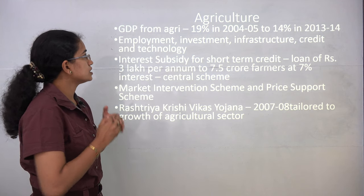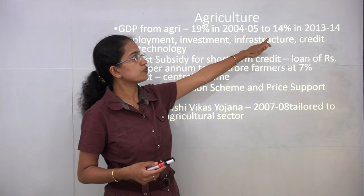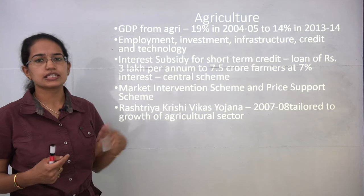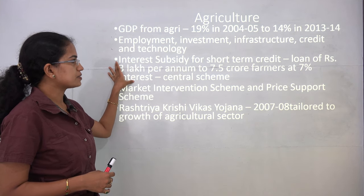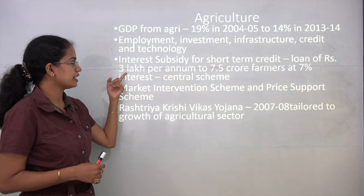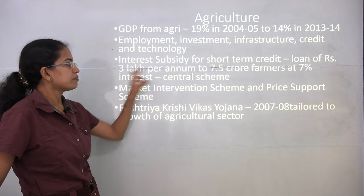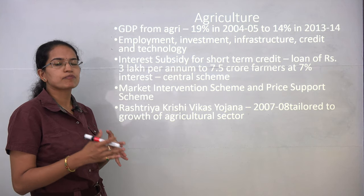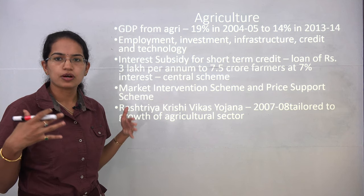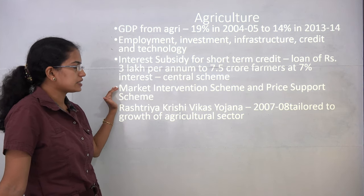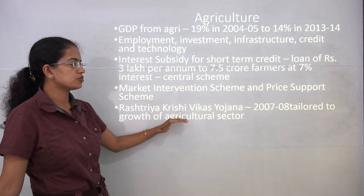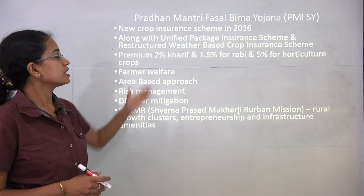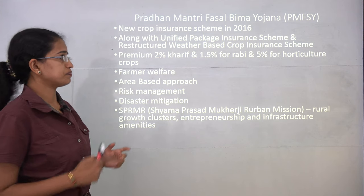Agriculture is the heart and soul of the rural economy. GDP from agriculture has come down from 19 percent to 14 percent. More employment, investment, infrastructure, credit, and technology are being provided. Interest subsidy is given for short-term credit — loans of 3 lakhs per year to 7.5 crore farmers at 7 percent. Market intervention schemes and price support systems are also coming up. Rashtriya Krishi Vikas Yojana, launched in 2007–08, has been subsumed under the agricultural sector schemes.